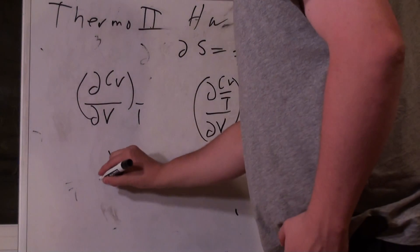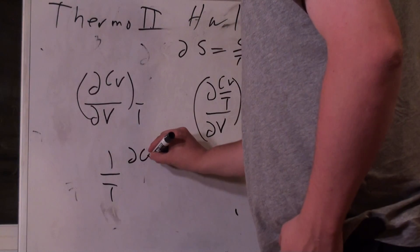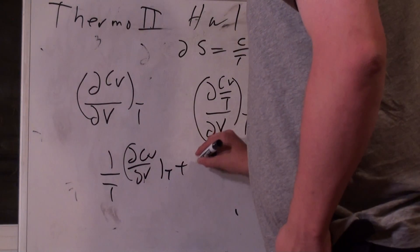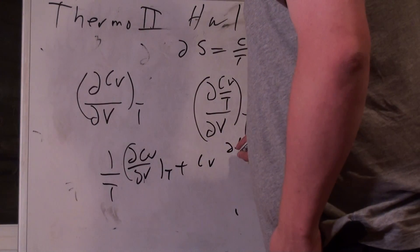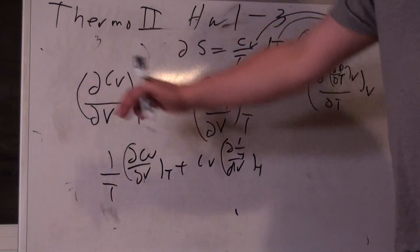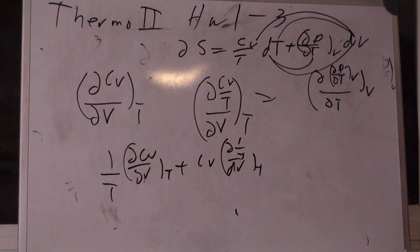Ha-ha. So, I've got one over T times dCV/dV at constant T. Plus CV, d one over T, dV at constant T. Oh, there's that guy. Okay. Well, there's a one over T attached to him. But I can always use algebra to get rid of that T. But that's CV times d one over T over dV. Okay.